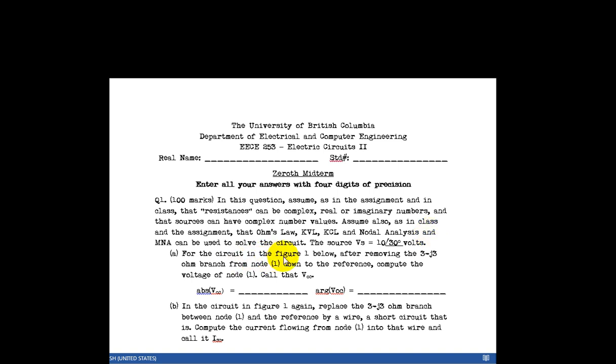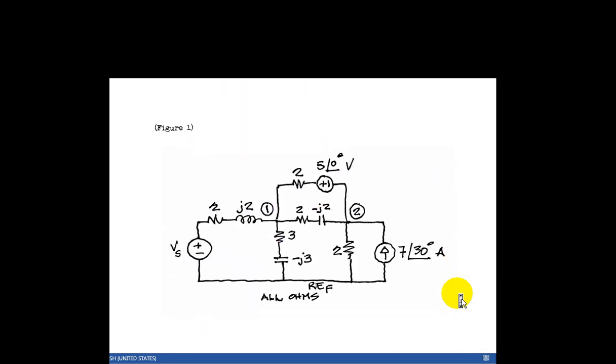So for the circuit in figure 1 below, I'll show you that figure in a moment. After removing the 3-J3 Ohm branch from node 1 down to the reference, compute the voltage of node 1 and call that VOC. Let's have a look at that circuit in figure 1. Here it is.